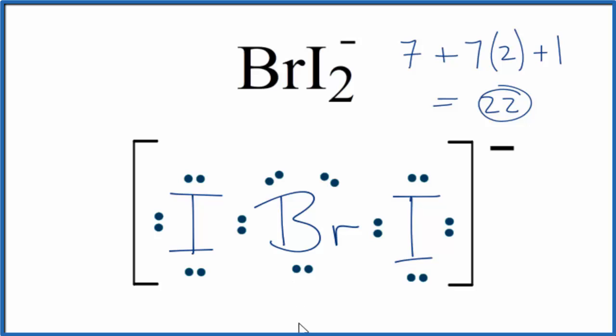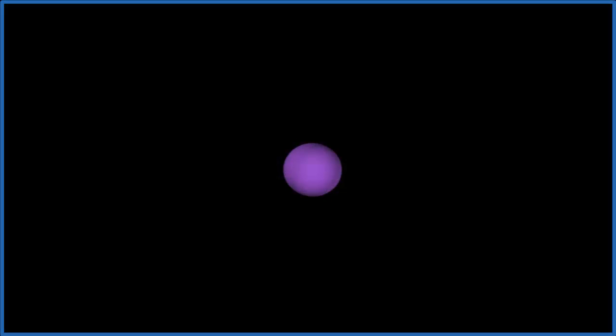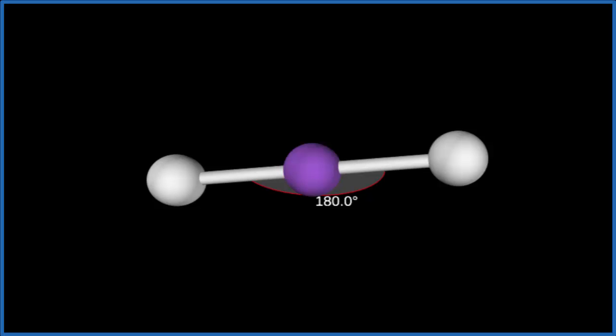Let's look at the molecular geometry quickly. We have two atoms here, and then we have one, two, three lone pairs. The purple, that'll be the bromine, will add two iodine atoms. They spread out to be as far away from each other as they can.